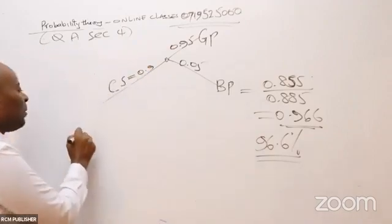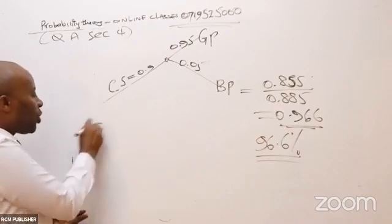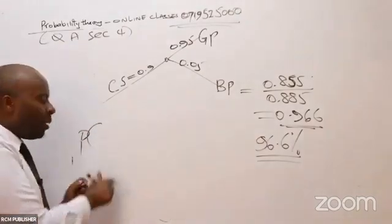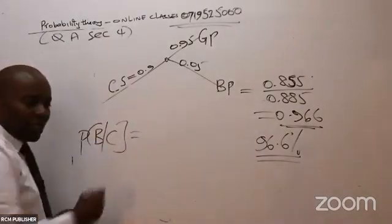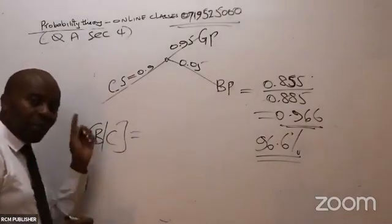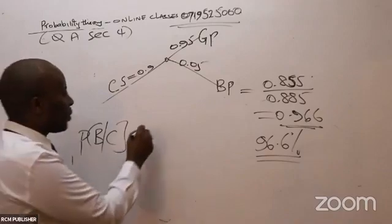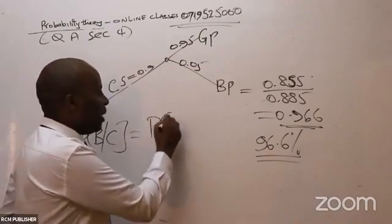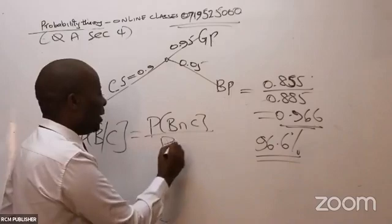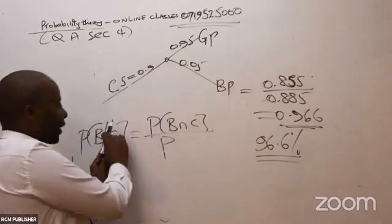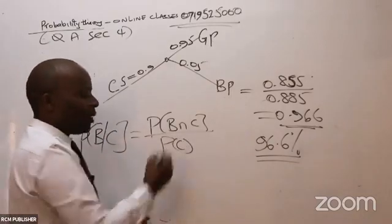Most importantly, remember that for conditional probabilities, if somebody wants you to give them the probability of B given C, you expand it as: probability of B and C, all over probability of the denominator event, which in this case is probability of C.